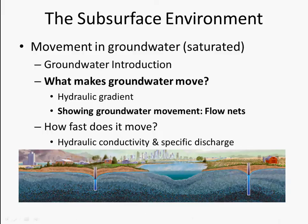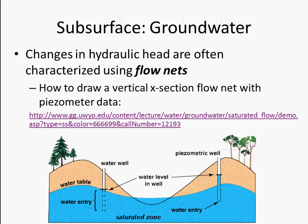In this last video we're going to talk about how we can show groundwater movement using something called flow nets. Changes in hydraulic head are often characterized using these flow nets, and you can draw them for vertical cross sections because we know there are gradients in hydraulic head between higher and lower elevations at different points within an aquifer.